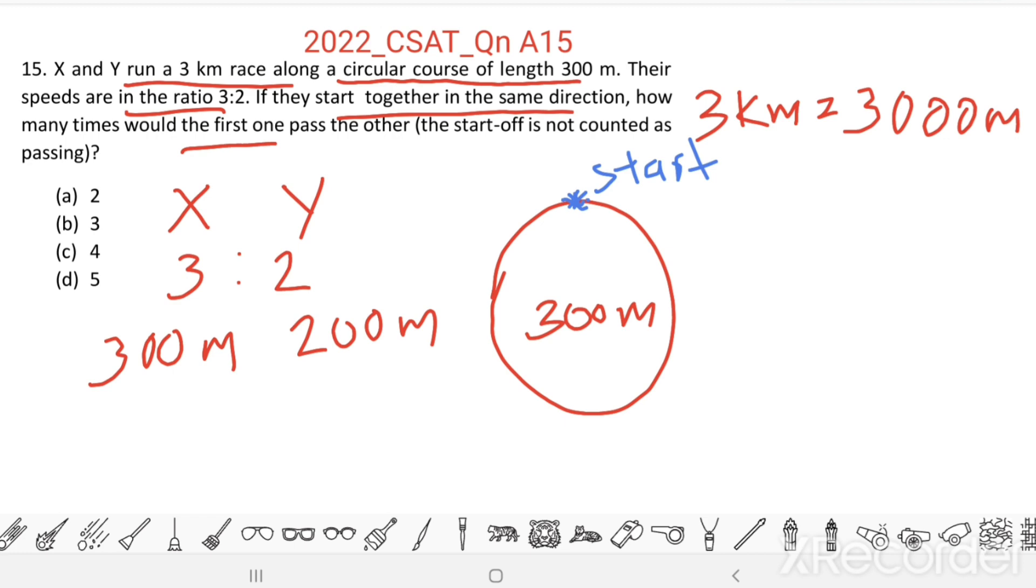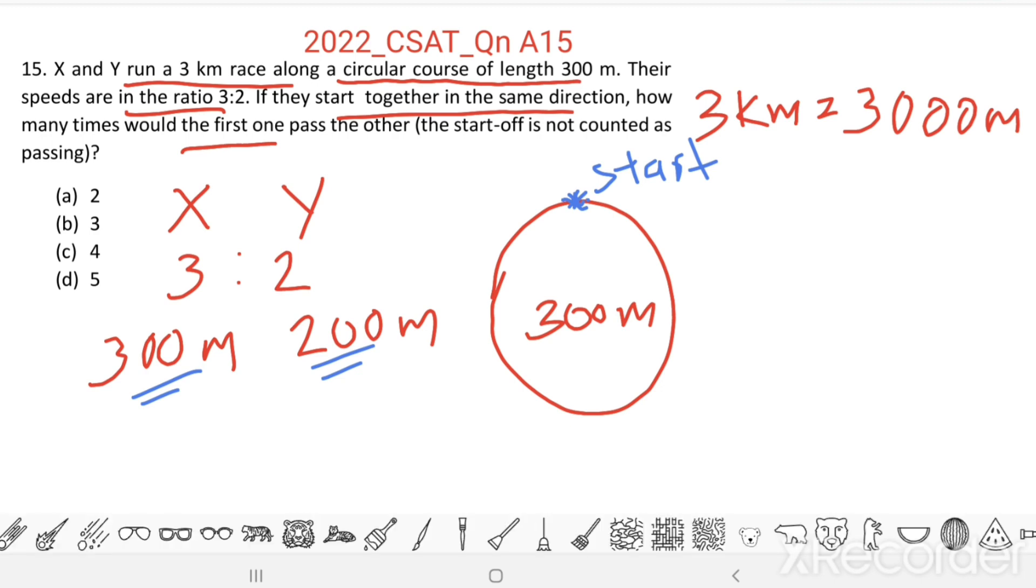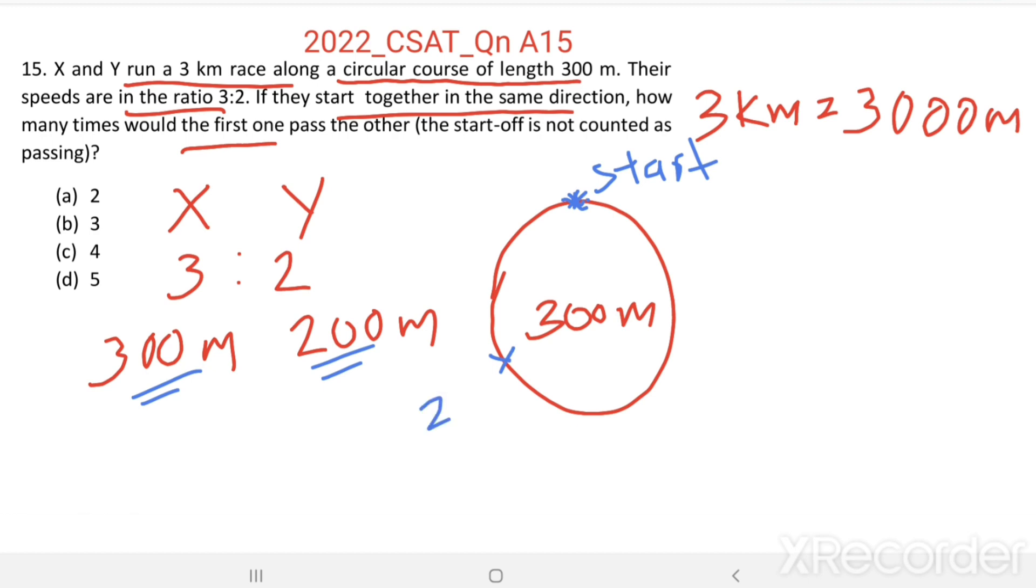When X runs 300 m, Y runs only 200 m. That means when X completes one rotation, Y completes only 200 m. That means Y lags behind X by 100 m.